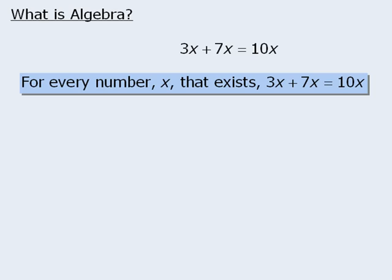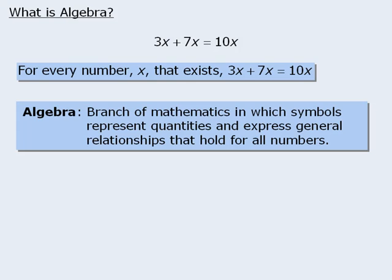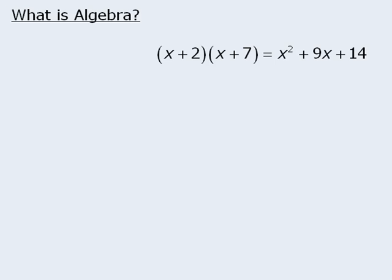This kind of generalization is what algebra is all about. Algebra is essentially a tool that uses letters to express general relationships that hold true for all numbers. So later in this module, when we say that x plus 2 times x plus 7 is equal to x squared plus 9x plus 14, we are saying that for every possible value of x, x plus 2 times x plus 7 and x squared plus 9x plus 14 will have the same evaluation.